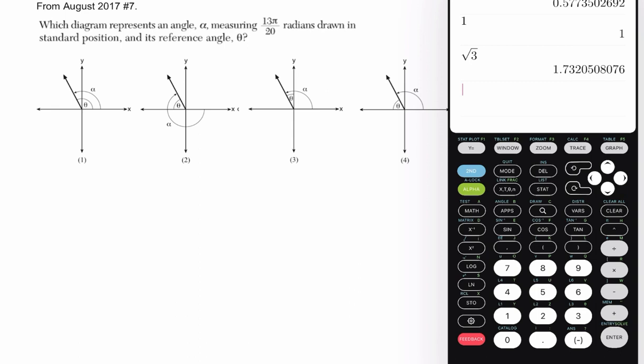All right, so you've read the problem, and let's just go over some of the basics. We're looking at an angle, they call it alpha, and they're giving you that it's 3 pi over 20 radians drawn in standard position, and its reference angle is theta. And they want us to see which of these images actually has all of that.